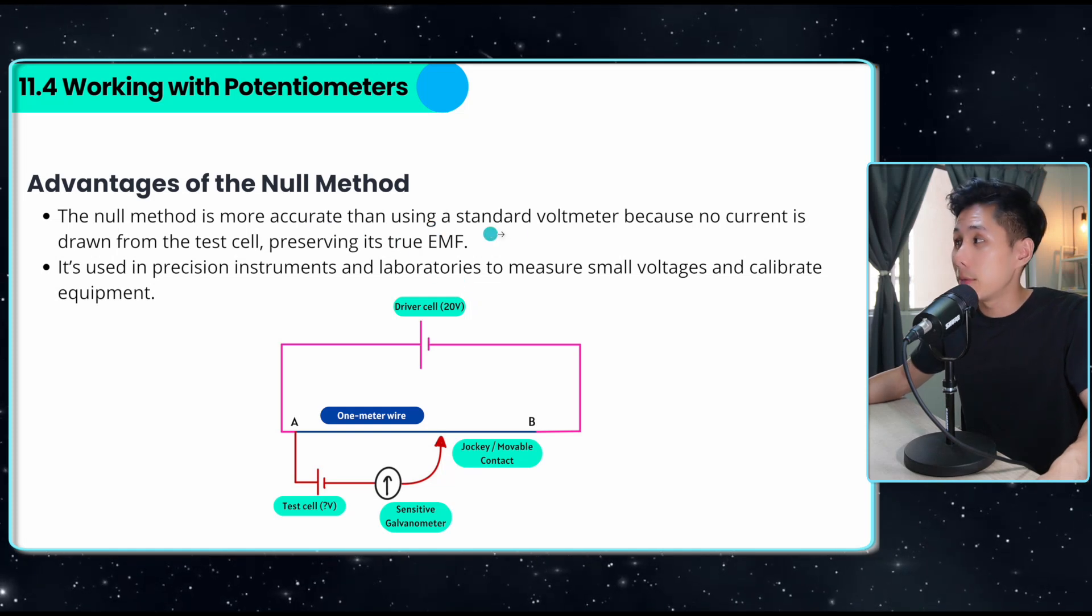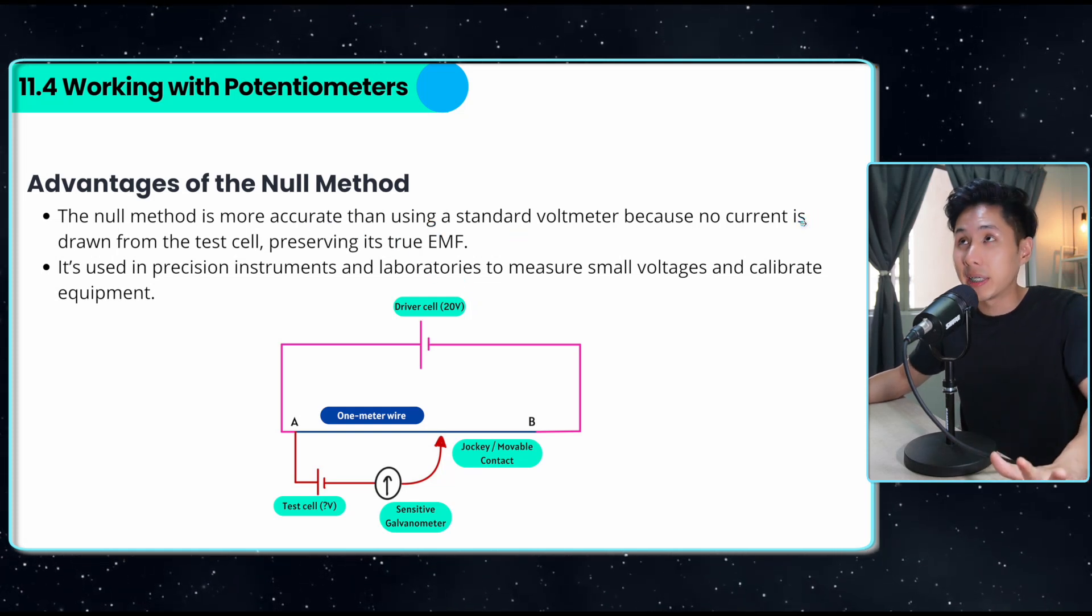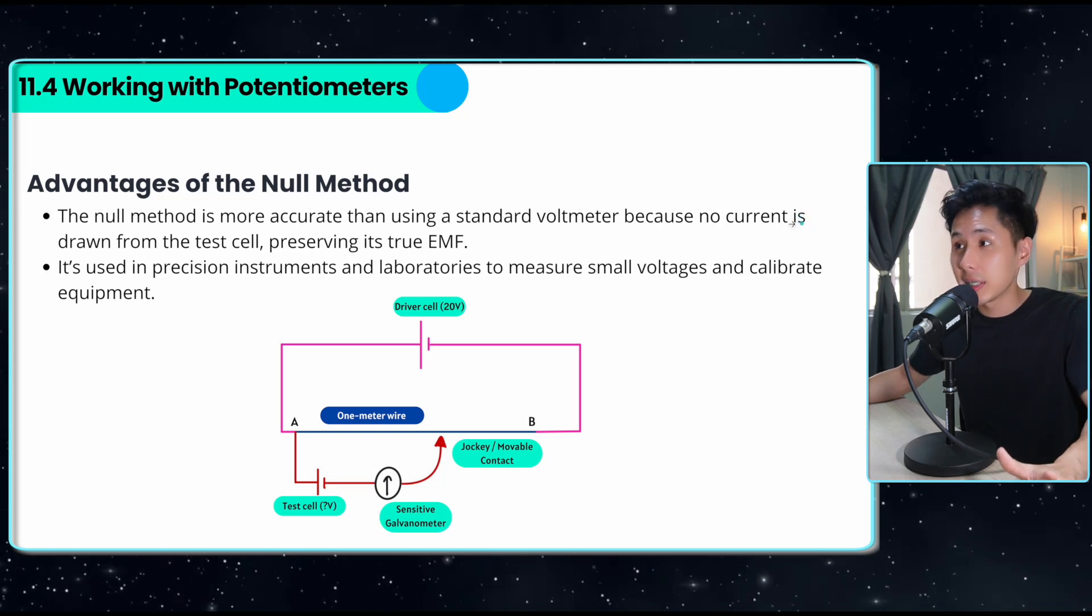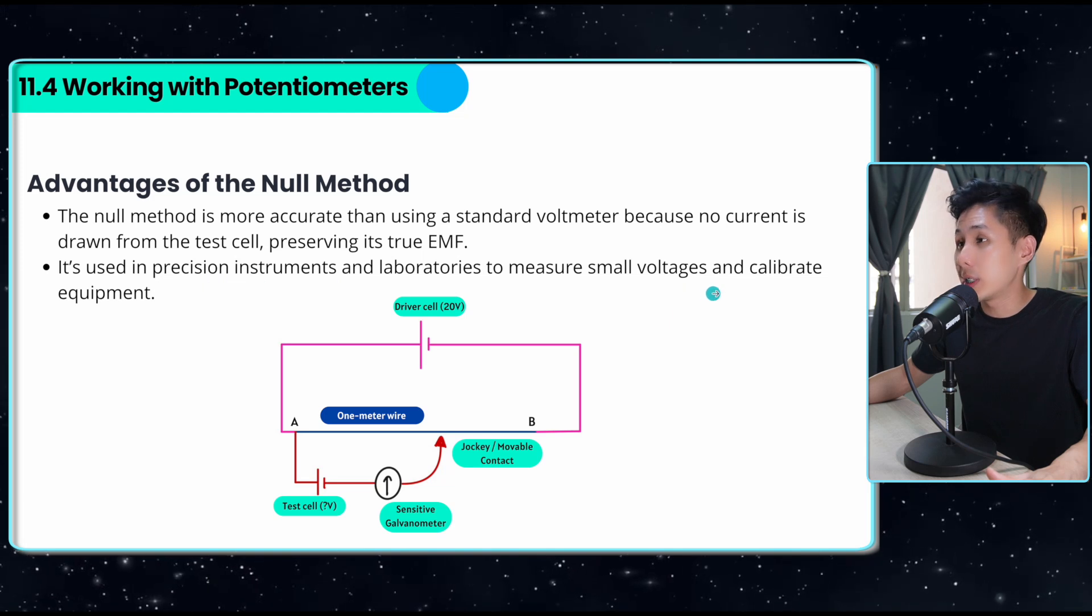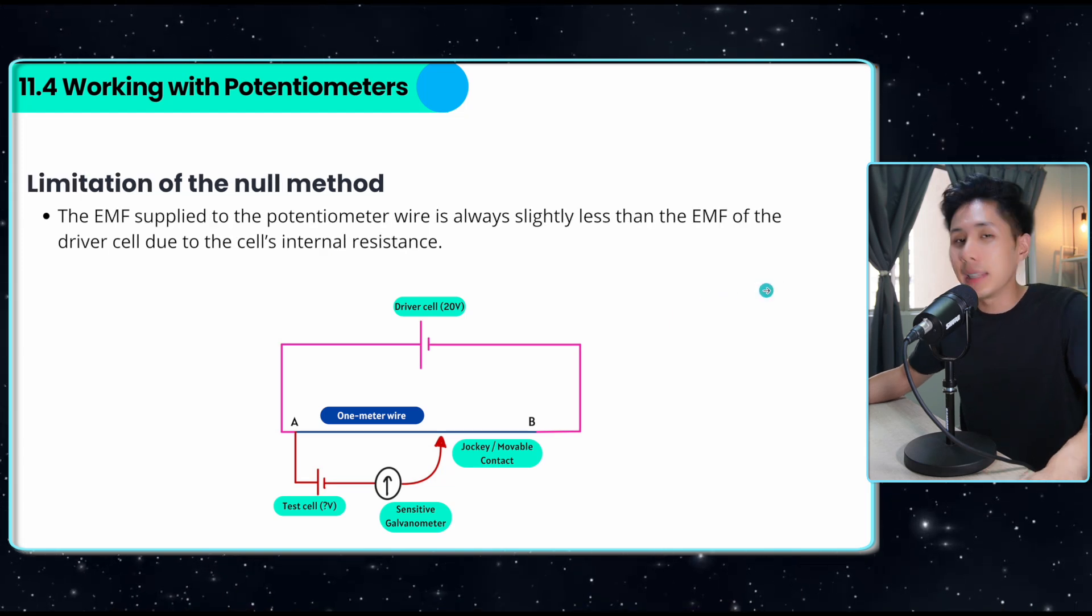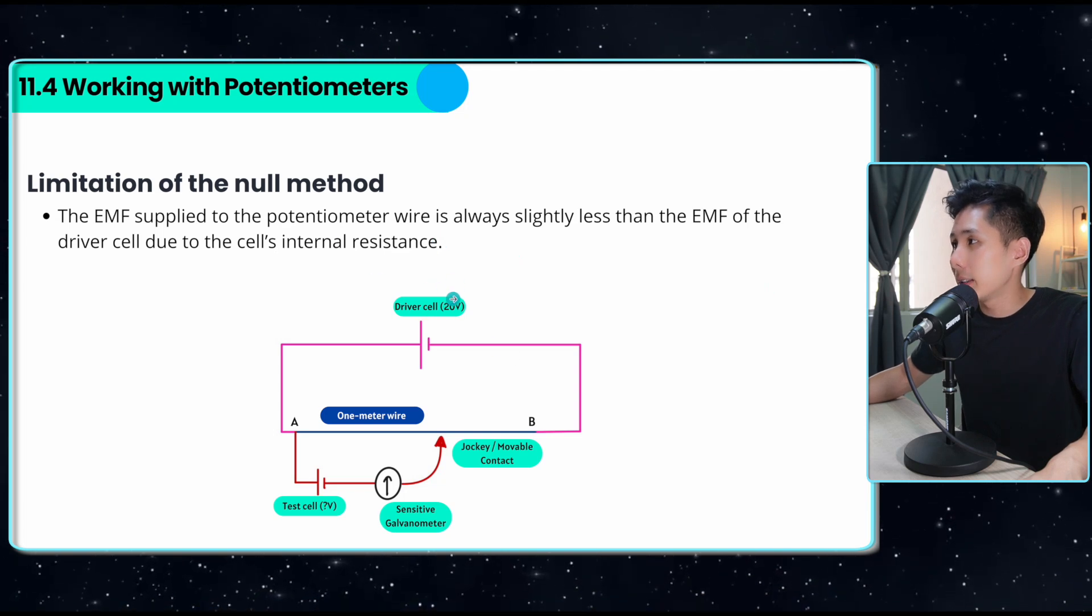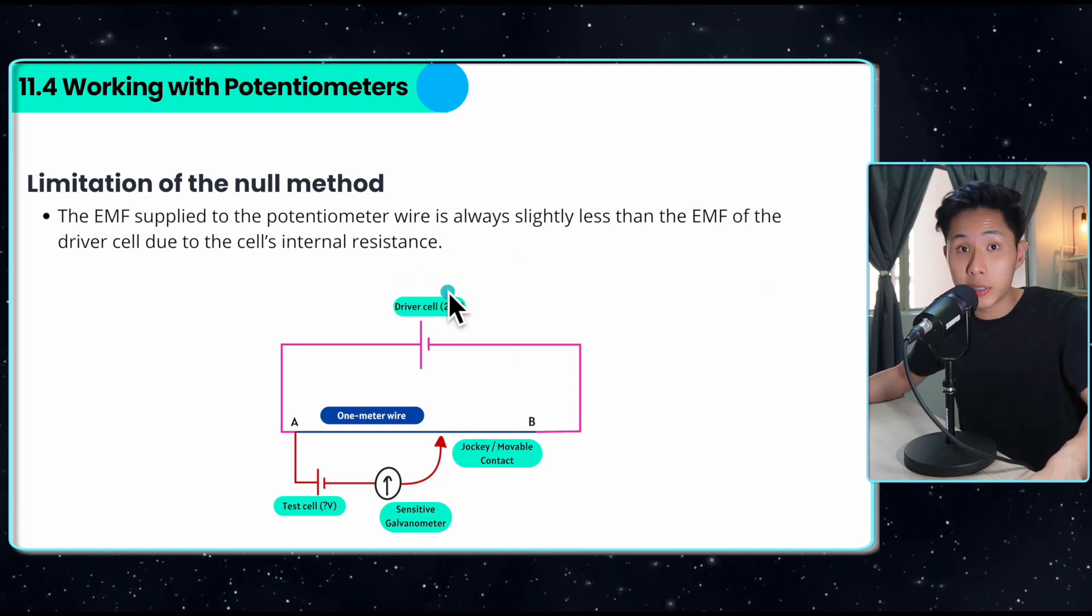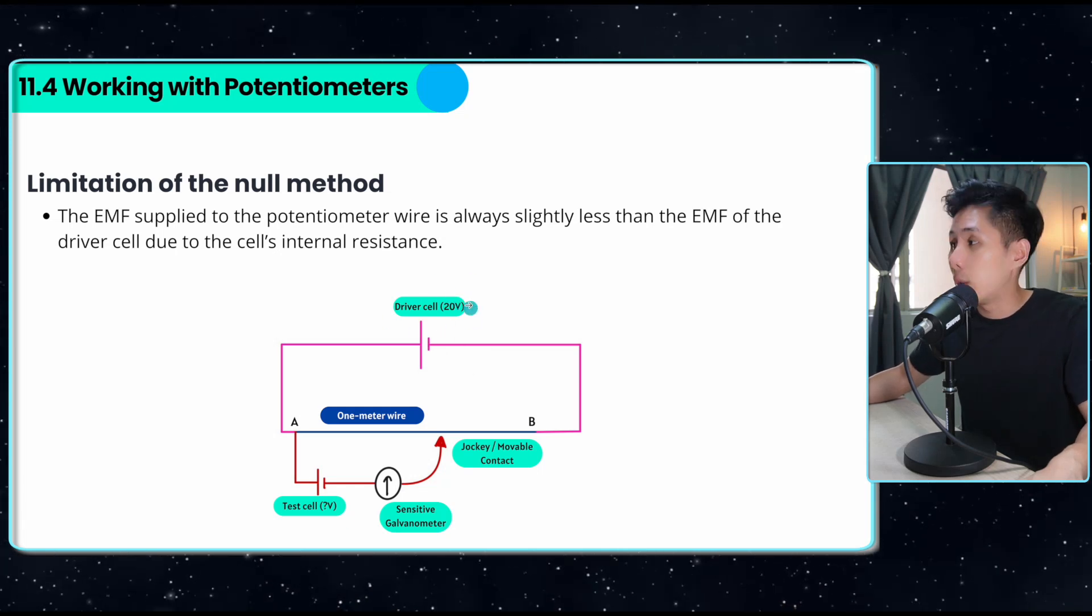The advantage is that it's more accurate than using a standard voltmeter because no current is drawn. That means we don't have to go through internal resistance. It is often used in the lab to measure small voltages and calibrate equipment. The limitation is that the EMF supplied to the potential wire by the driver cell is sometimes not accurate because there is internal resistance within this cell.